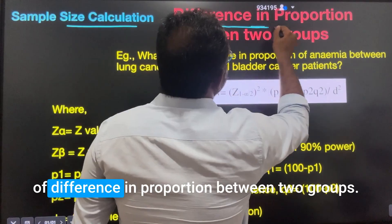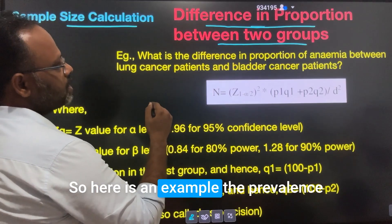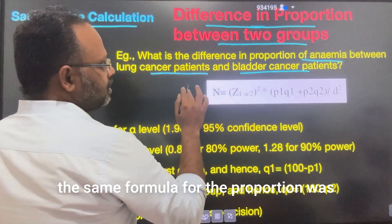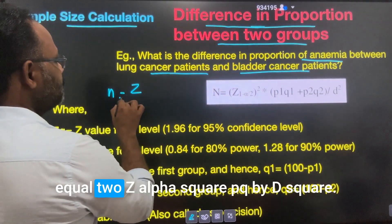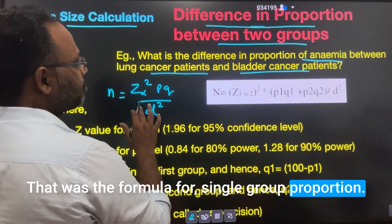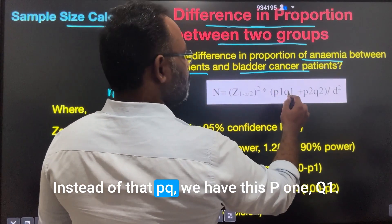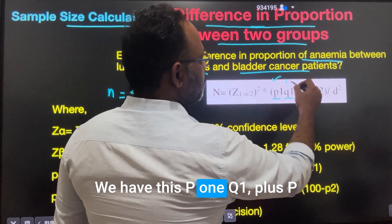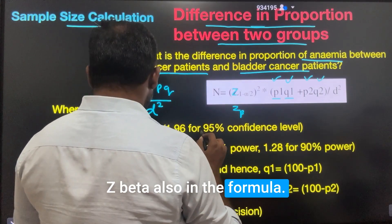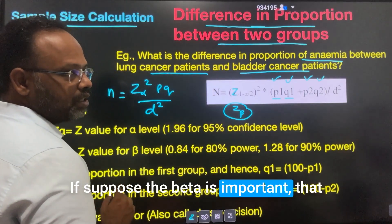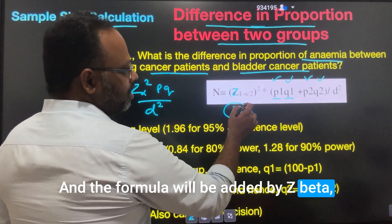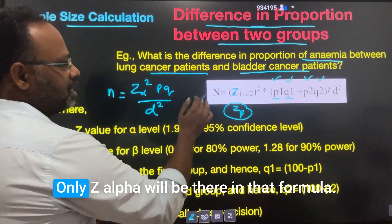Next, sample size calculation for difference in proportion between two groups. The example is prevalence of anemia between lung cancer patients and bladder cancer patients. The formula is N = Z_alpha² × (P1Q1 + P2Q2) / D². Sometimes Z_beta is also incorporated when false positives are important, making the formula include an added Z_beta term. Commonly, Z_beta is not included — only Z_alpha appears in the formula. Z_alpha = 1.96 for 95% confidence interval.